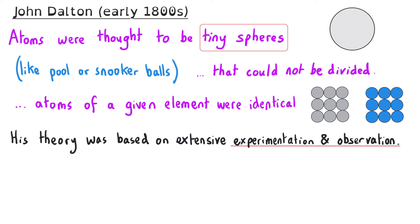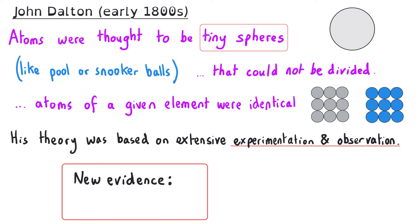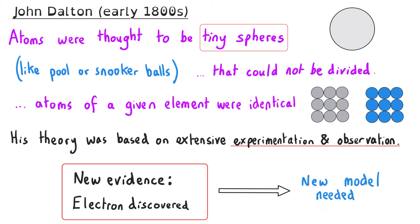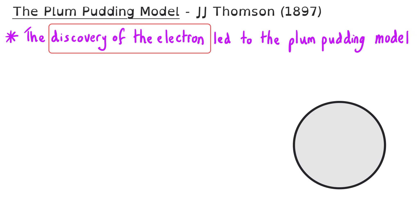However, less than a hundred years after Dalton proposed his model, new evidence about atomic structure was found through experiments, and the electron was discovered. This new evidence could not be explained using the current model, so a different model was needed. The discovery of the electron by JJ Thomson at the end of the 19th century led to the plum pudding model.